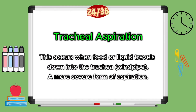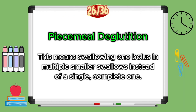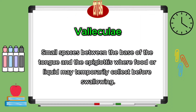Tracheal aspiration occurs when food or liquid travels down into the trachea — your windpipe. Dystonic tremulous movements are involuntary or shaky movements often seen in neurological conditions such as Parkinson's disease, which can affect swallowing coordination. Piecemeal deglutition means swallowing one bolus in multiple smaller swallows instead of a single complete swallow. The vallecula is a small space between the base of the tongue and the epiglottis where food or liquid may temporarily collect before swallowing — you have two vallecular spaces, one on each side.